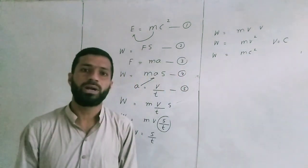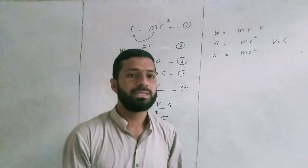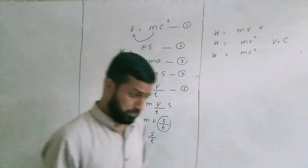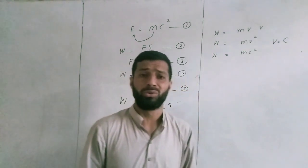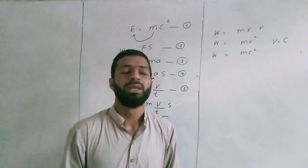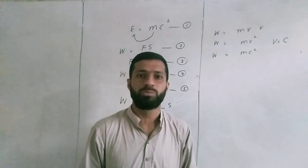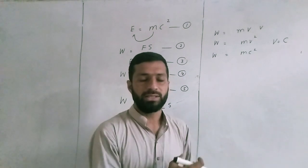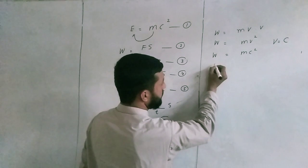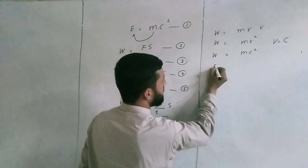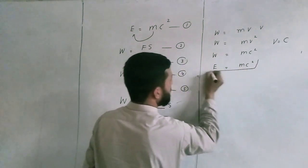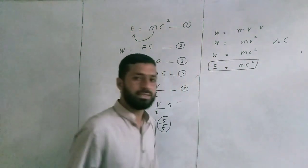According to the work-energy principle, we say that work done is equal to energy. If the energy is due to motion of the body, we say work done equals kinetic energy. If the energy is due to change in position, we say it equals potential energy. So according to the work-energy principle, E equals mc squared, which is proof of the Einstein equation.